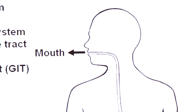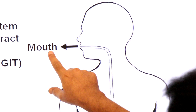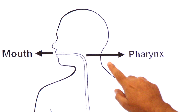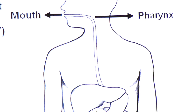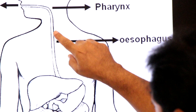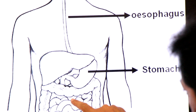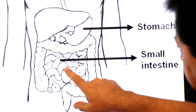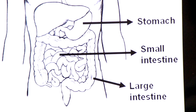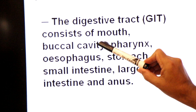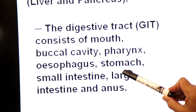The digestive tract starts from the mouth. The first part of the GIT is the mouth, which opens into a cavity called the buccal cavity or oral cavity. After the oral cavity, the pharynx region starts, and the pharynx opens into a long tube known as the esophagus. The esophagus leads to the stomach, which opens into the small intestine, which in turn opens into the large intestine, terminating at the anus.